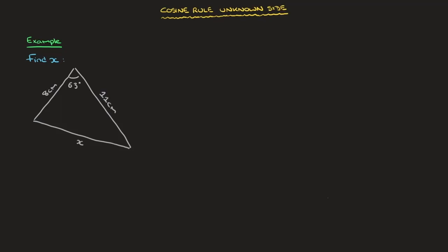Hi everyone. In this video, we're going to learn about the cosine rule. In particular, we're going to learn how to use the cosine rule to find an unknown side length in a triangle. And in just a minute, I'm going to work through the example you see here. Before doing that, let me remind you of — or introduce you to — the formula we use with the cosine rule.